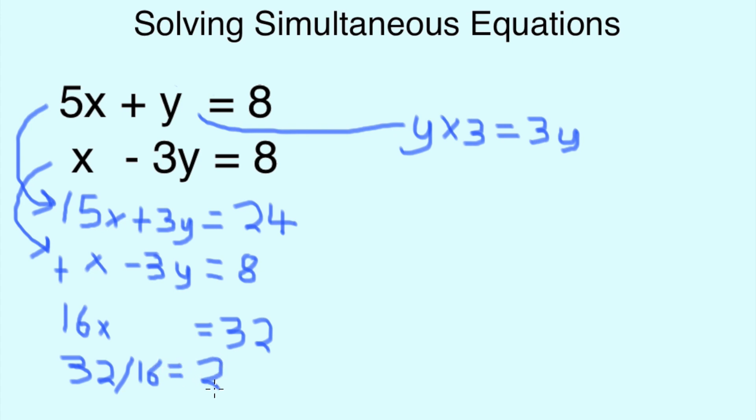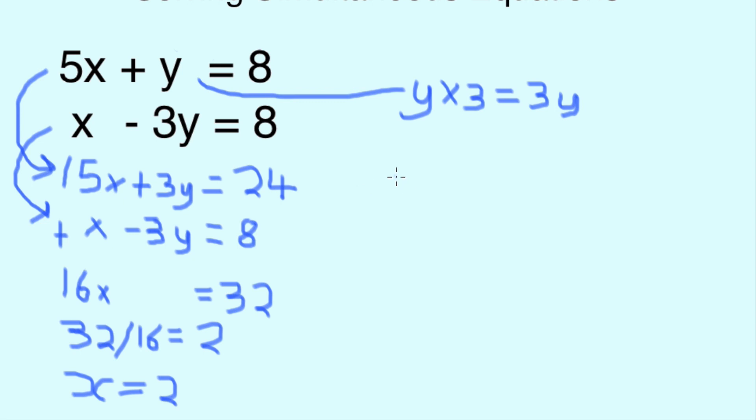Now, what we need to do is find the value of y. So, to find the value of y, we simply take our first equation that we had here, 5x plus y equals 8, and knowing that x equals 2, we can do 5 times 2 is 10, so 10 plus y equals 8. Turn that back on itself, so the result, 8 minus 10 equals minus 2. Therefore, y equals minus 2.